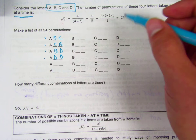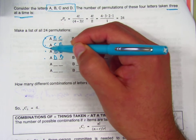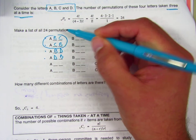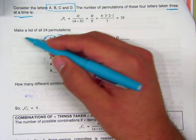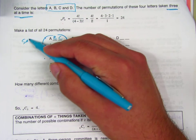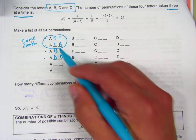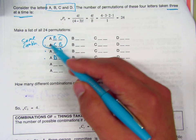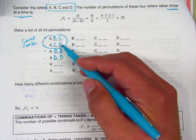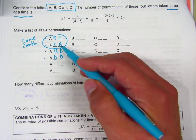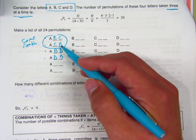The question is, though, this is the same combination of letters, correct? Because we have A, B, and C in this group, and we also have A, B, and C in this group. Order is different, but it's the same group, essentially. Does that make sense?